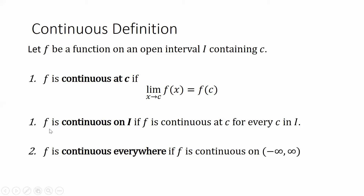We say a function is continuous on an interval if the function is continuous for every value c in that interval. We say f is continuous everywhere if f is continuous on the interval from negative infinity to positive infinity.